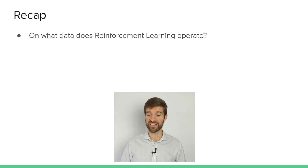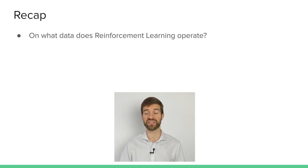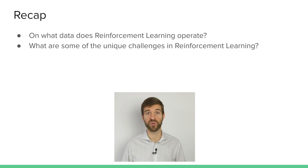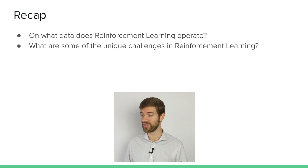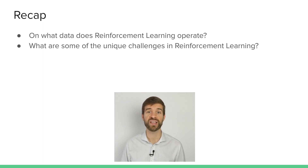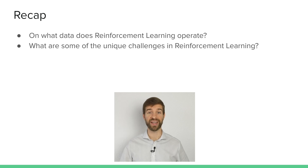But before we do that, let's have a quick recap on what we talked about last week. On what data does reinforcement learning operate? We've seen supervised learning where we have our inputs and targets, unsupervised learning where we only have some data, and reinforcement learning, which in contrast operates on state-action pairs. Some of the unique challenges for reinforcement learning include delayed consequences, exploration where we might have censored data, and optimization and generalization challenges. Delayed consequences is particularly challenging, as we might only know whether an action was good or not long after we took that action.